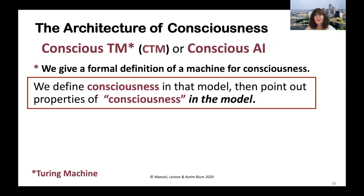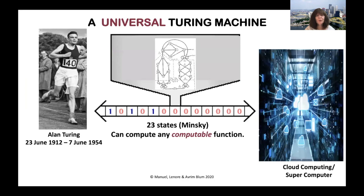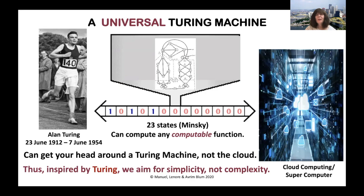We'll give a formal definition of a machine for consciousness — we call it the conscious Turing machine (CTM) or conscious AI. We define consciousness in that model, then point out properties of consciousness in the model. We are inspired by Turing's simple yet powerful model of a computer: a small 23-state universal Turing machine can compute anything you can compute in the cloud or with a supercomputer, but you can get your head around the Turing machine, not the cloud. We are aiming for simplicity, not complexity.